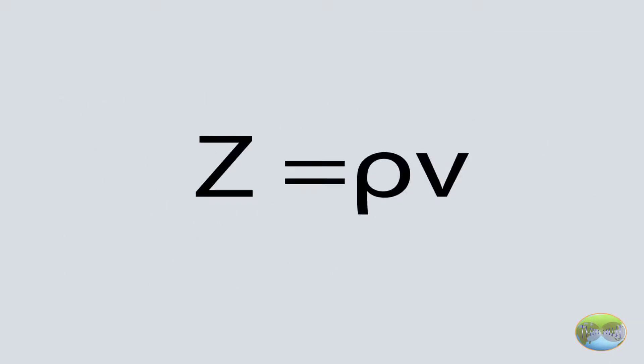And it is equated to the product of density and velocity of wave. Since we are using P-waves, it would be the velocity of P-waves. Based on this product, impedance varies from one rock to another.